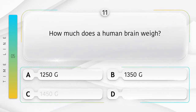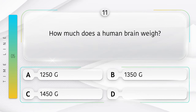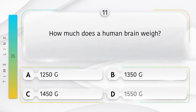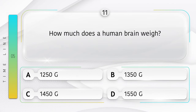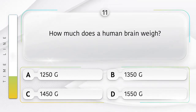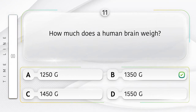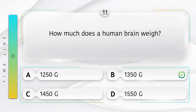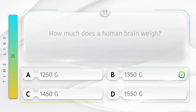How much does a human brain weigh? Option A: 1250 grams, B: 1350 grams, C: 1450 grams, D: 1550 grams. Answer is option B: 1350 grams.